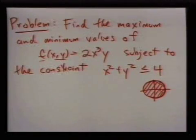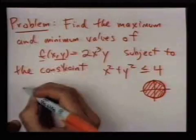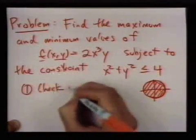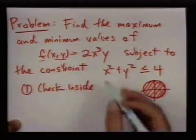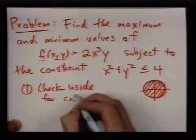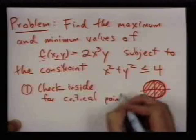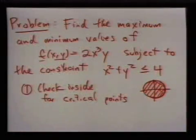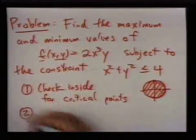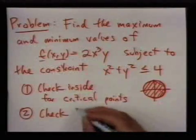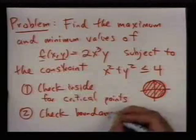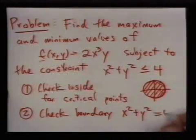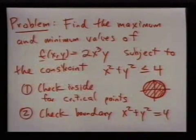So the first thing we check is the inside of this disk for critical points, and this will give us a list of points that if the maximum or minimum is inside, it'll be in that list. We don't have to worry too much about whether they're local maxes or mins. And then second, we're going to check the boundary, which has equation x² + y² = 4, using Lagrange multipliers.